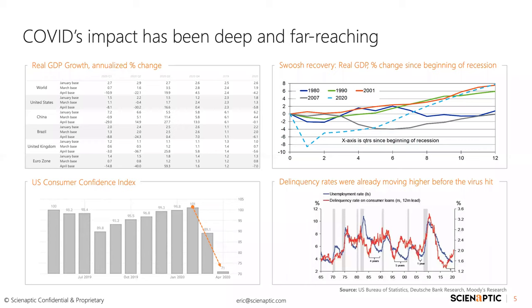The U.S. Consumer Confidence Index dropped very low in April, and at the end of this month I expect it will probably have dropped further. This is relative to a benchmark of 1966 — we were hovering at that benchmark level over the past 12 months, and then this hit and everything changed. The chart in the bottom right shows the correlation I referenced on the previous slide: unemployment rate with delinquency rate. As you can see, they walk fairly much in lockstep together.